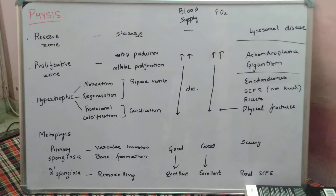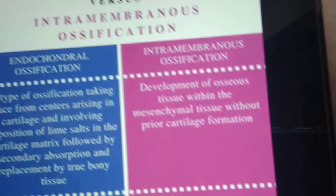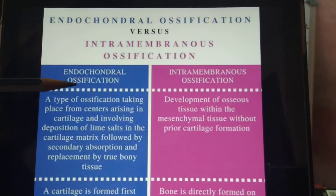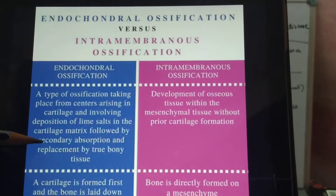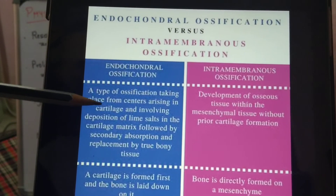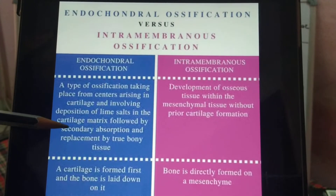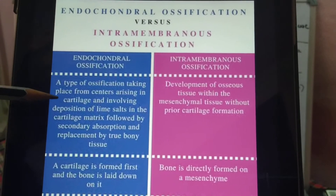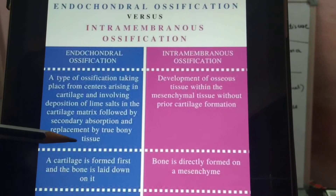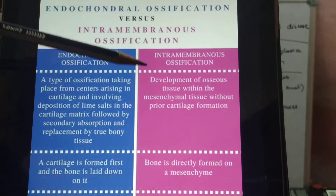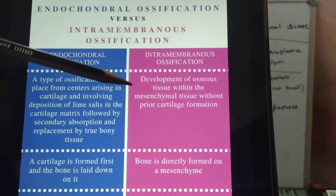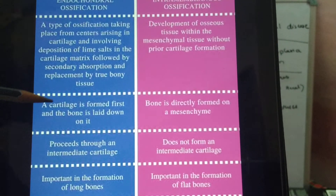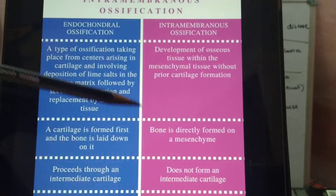Now discussing the two types of ossification: endochondral ossification and intramembranous ossification. Endochondral ossification is a type where cartilage formation occurs first and later bone is deposited — ossification taking place from centers arising in the cartilage, involving deposition of lime salts in the cartilage matrix, followed by absorption and replacement by true bony tissue. The cartilage is not converted into bone; it is resolved and replaced. In intramembranous ossification, bone formation occurs directly from mesenchymal tissue without prior cartilage formation.